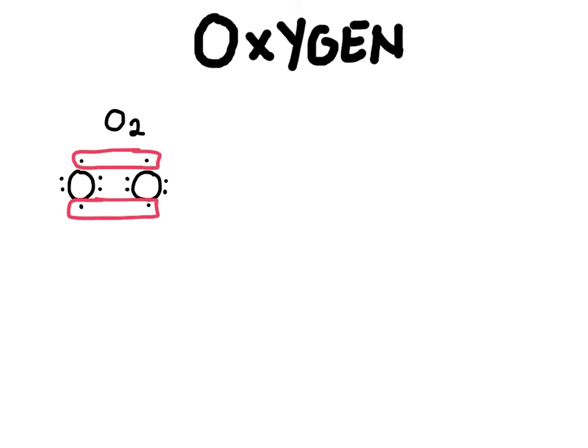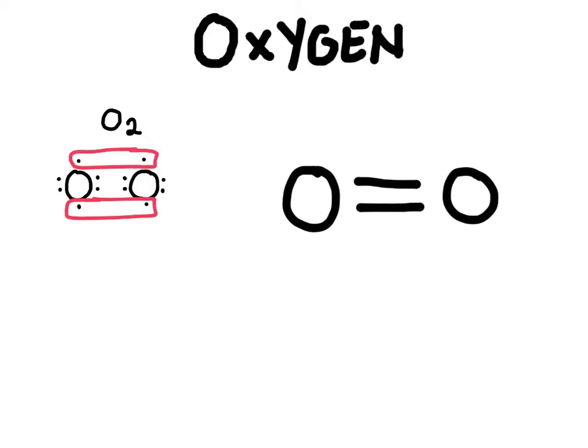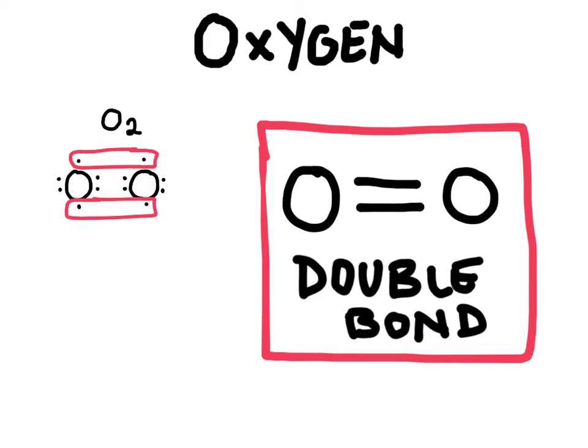Let's rewrite this as a structural formula, redraw it here, and we can put this, what we call a double bond between the two oxygens. And so this is our first special type of covalent bond, it's a double bond. And so some elements may share more than just one electron in a bond.